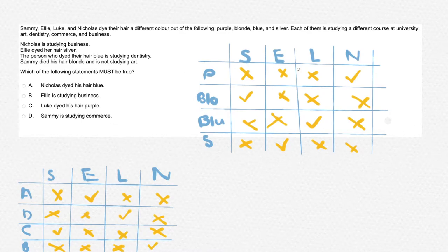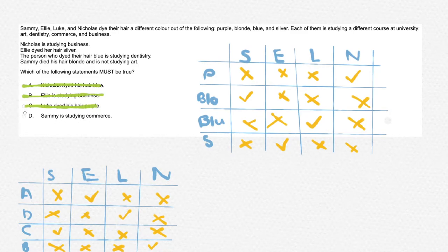Now let's go through the statements. 'Nicholas dyed his hair blue' — we can see in the table that this is incorrect. 'Ellie is studying business' — this is also incorrect. 'Luke dyed his hair purple' — this is incorrect as we know he dyed his hair blue. 'Sammy is studying commerce' — this is correct as you can see in the table.